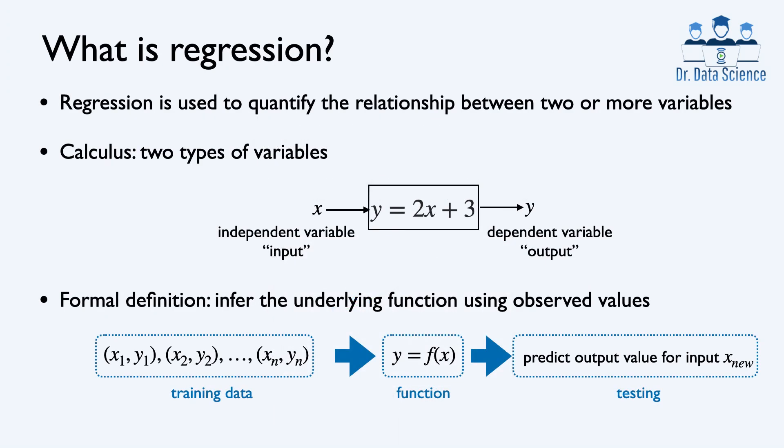Regression is used to quantify the relationship between two or more variables. We know that we have two types of variables: independent variables and dependent variables. So let's say that x is an independent variable, which can be viewed as an input to a function, and then the dependent variable, or output, is related to x through some function. Here we simply multiply x by 2 and then add 3 to find the output or the dependent variable.